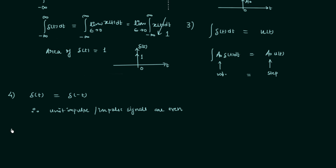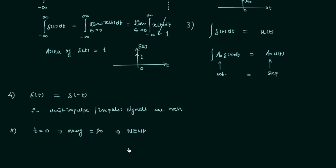Property number 5: we will find out if impulse signals are energy signals, power signals, or NENP signals. From the waveform, when t equals 0 the signal magnitude is infinity. Whenever this happens, the signal is neither energy nor power (NENP) because in NENP signals, if the magnitude is infinity at any one instant, the average power will be infinity — not finite or zero. So the impulse signal is neither energy nor power signal. This is property number 5.